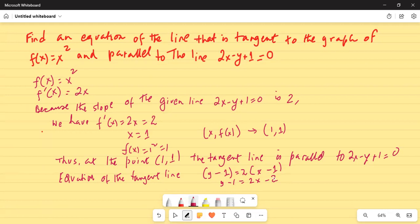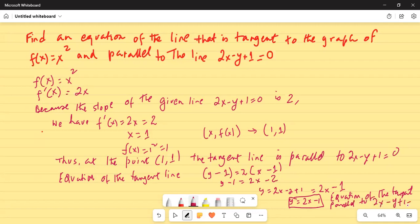So the equation becomes y equal to 2x minus 2 plus 1, or is equal to 2x minus 1. So y equal to 2x minus 1 is the equation of the tangent which is parallel to the given line 2x minus y plus 1 equal to 0.